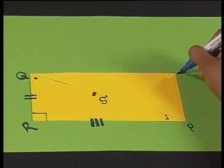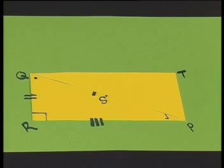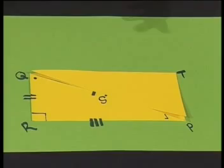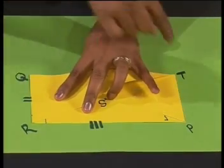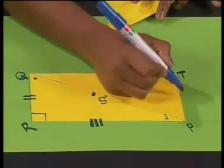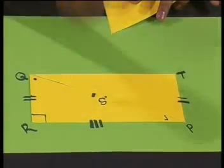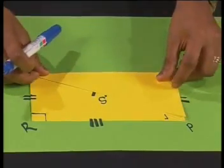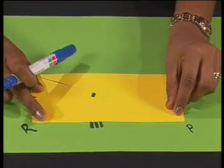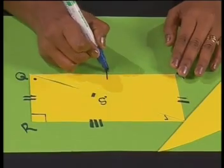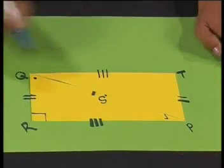Let's label this new point T. What we have made looks pretty much like a rectangle. To check that this really is a rectangle, let's investigate its sides and angles. If I flip the triangle, we see that QR is in fact equal to PT, and we can mark it with two strokes on this side. We also see that QT and PR are equal in length, so we can use the same markings to show that this side is equal to this side.